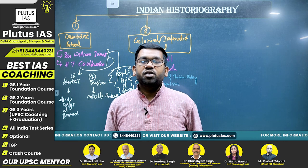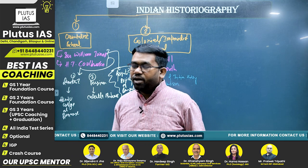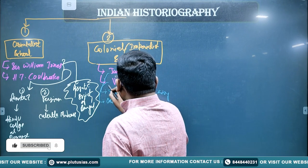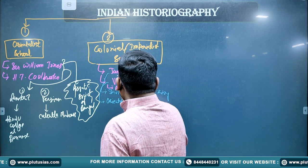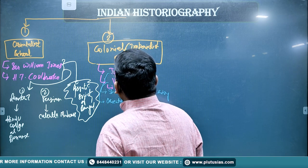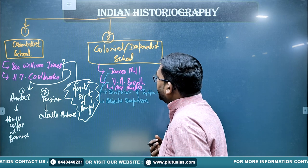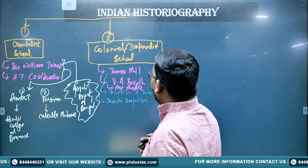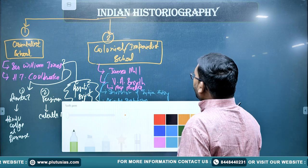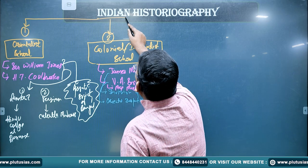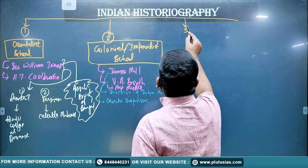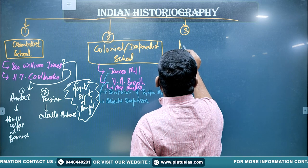We have other names also here — Max Müller is another important name in the imperialist school. These are the important colonial and imperialist historians. Now, the third school grew up in the early 20th century. This school is known as the Nationalist School.